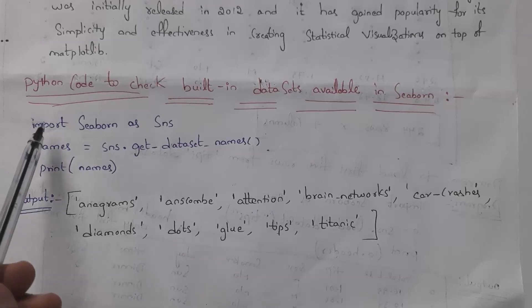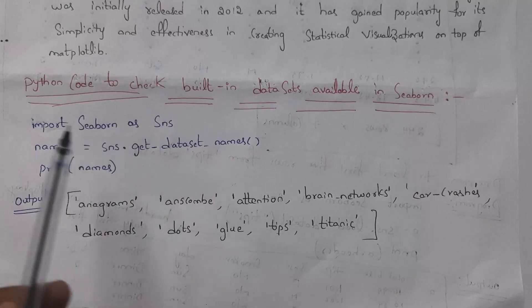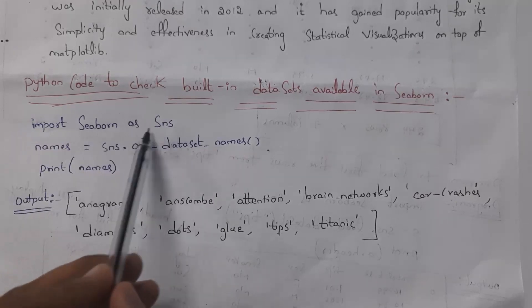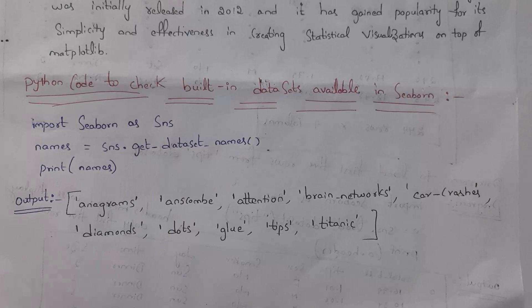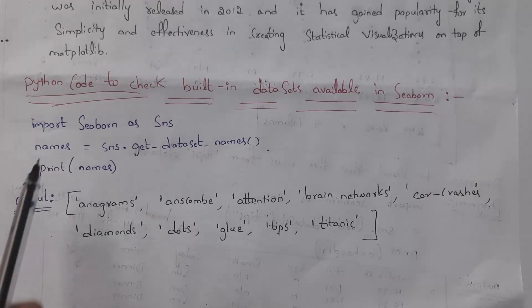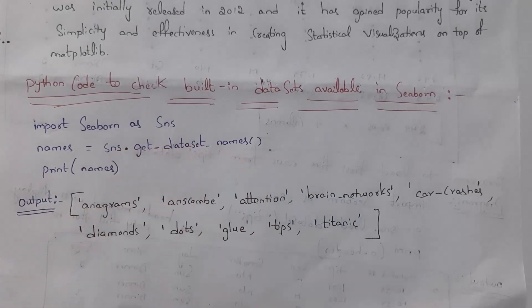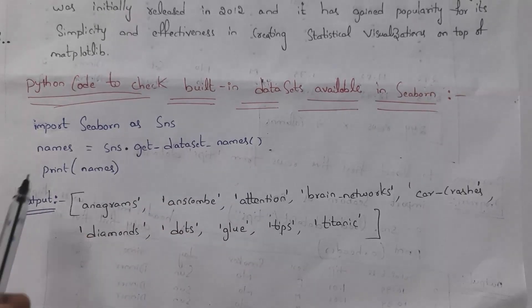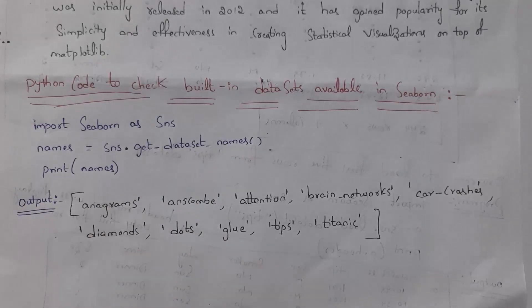First, write import seaborn as sns, where sns is the alias name for the Seaborn library. Next, take a variable — I am using 'names' — and set it equal to sns.get_dataset_names(). By using the get_dataset_names() function, you can identify the various datasets available in Seaborn. The datasets are stored in the variable 'names', so write print(names). Whenever you run this program, it will display all built-in datasets available in Seaborn.